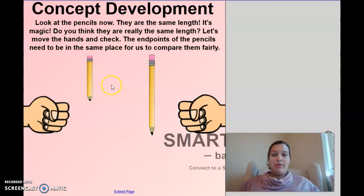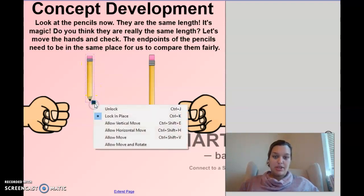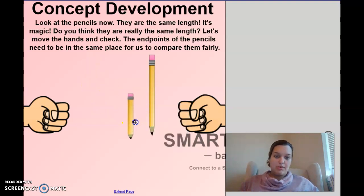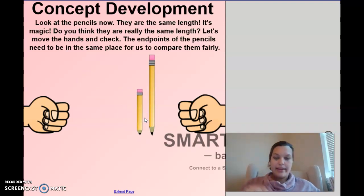So, the endpoints of the pencils need to be in the same space for us to compare them fairly. So, the endpoints are the tips. So, I'm going to move this down just to make sure my magic trick didn't work. Did it work? No. I really didn't do any magic.